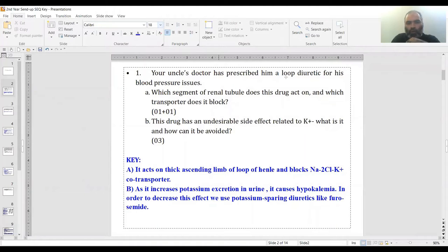The question mentions that your uncle's doctor has prescribed him a loop diuretic for blood pressure issues. The first question asks about the renal segment that this drug acts on and which transporter does it block.